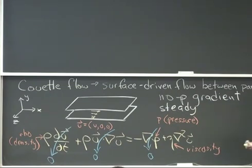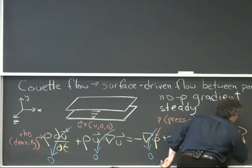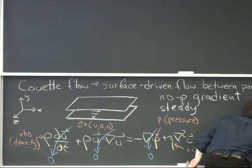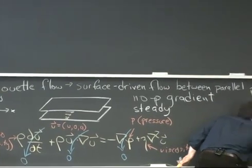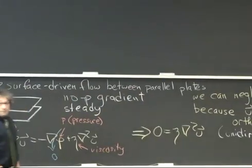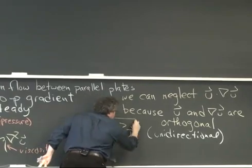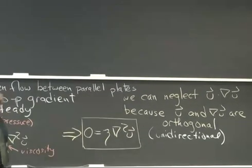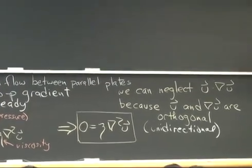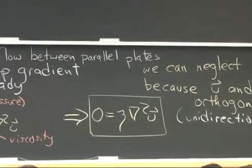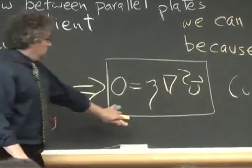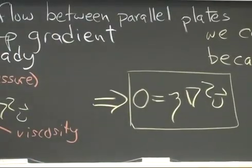What I'm left with, then, is this expression. I had four terms, I said three of them were equal to zero, which means that the fourth one has to be zero as well. This, now, is the governing equation for a Couette flow.